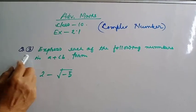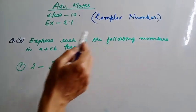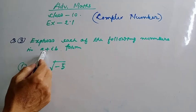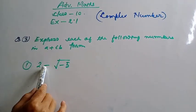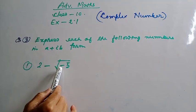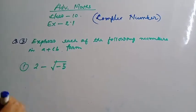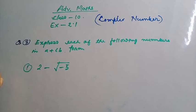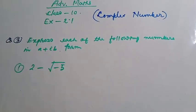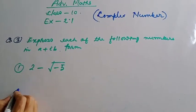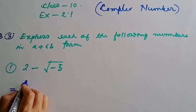Question number 3: express each of the following numbers in a plus ib form. Question number 1: 2 minus root over minus 5. What is a plus ib form? It is a real number and an imaginary number.